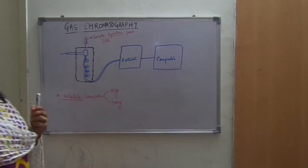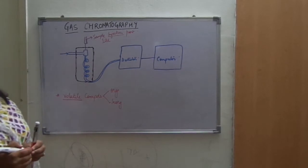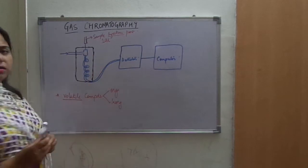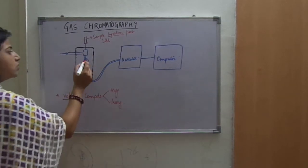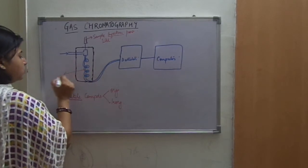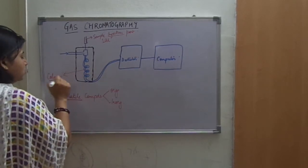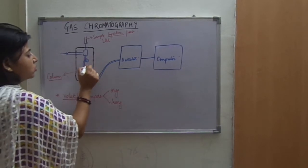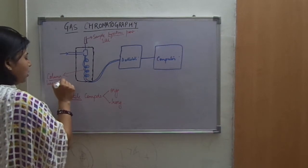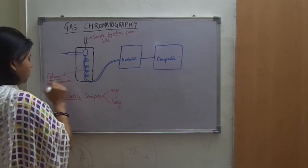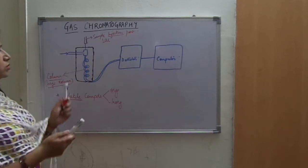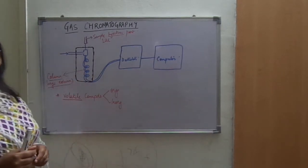Even if you have only 1 microliter of sample available, detection of sample components can be done with the help of gas chromatography. This part of the chromatography is the column. This spiral shape shows that the length of the column is large. Greater the length of the column, greater is the resolution, and better is the gas chromatography technique.